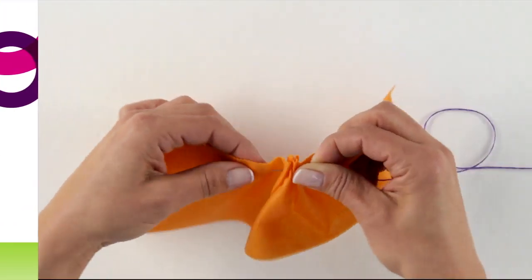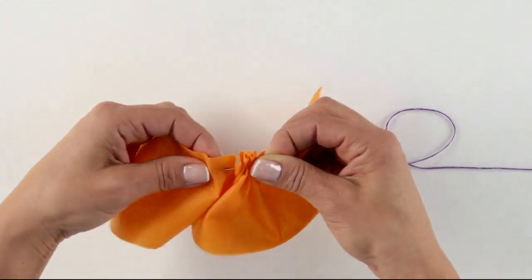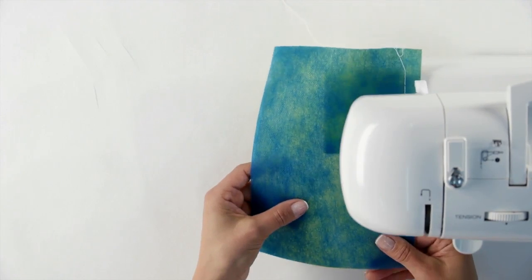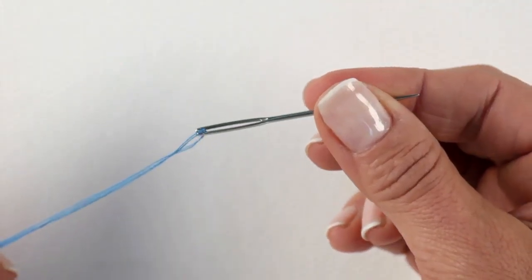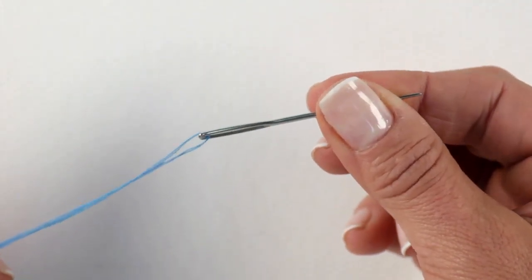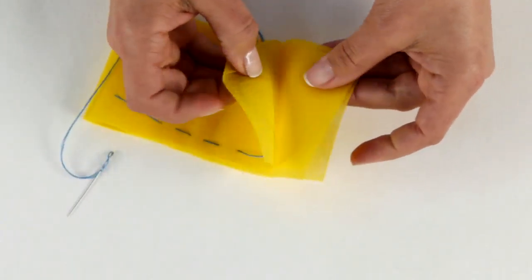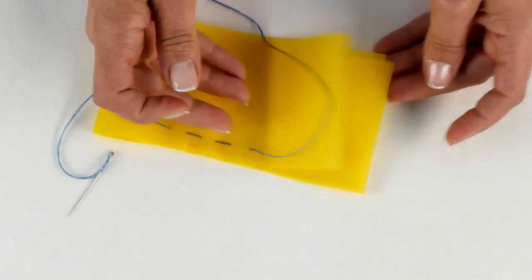Sewing. Want to sew SmartFab? Go right ahead with a needle and thread or a sewing machine. To protect small children, have them use a thick needle. All sorts of needles pass through SmartFab easily, even through several layers at a time.